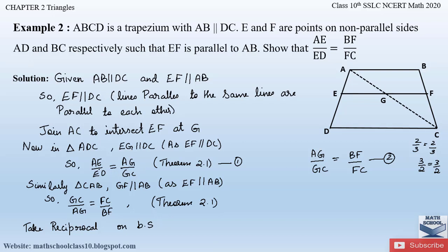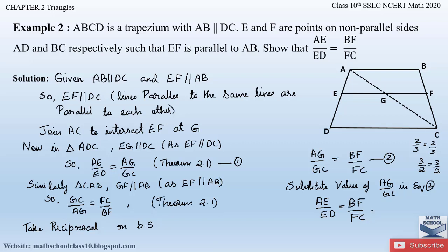Now, AG by GC in Equation 1 equals AE by ED. Substituting the value of AG by GC from Equation 1 into Equation 2: AE by ED equals BF by FC. Comparing this with what we had to prove — AE by ED equals BF by FC — it is the same. This is how we solve Example 2.